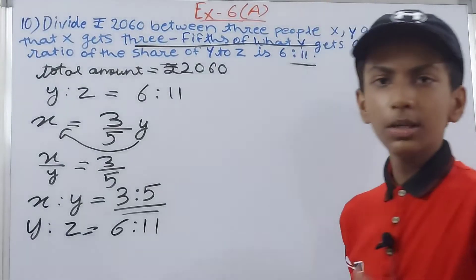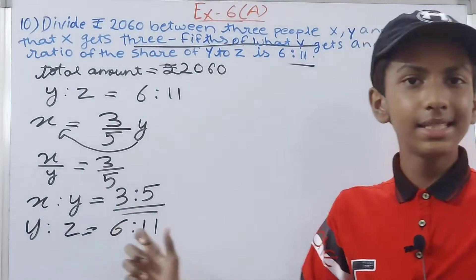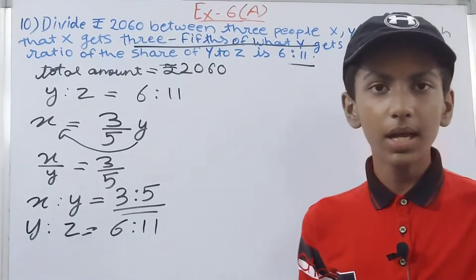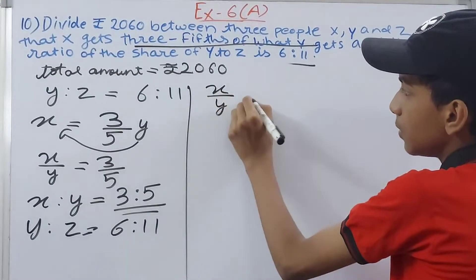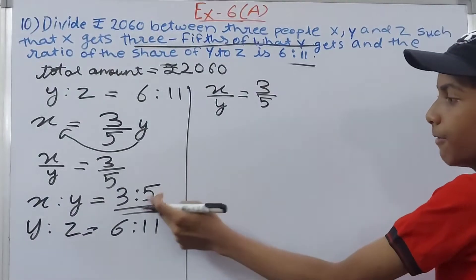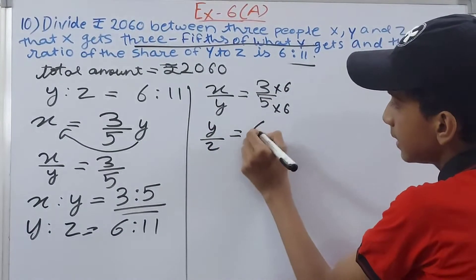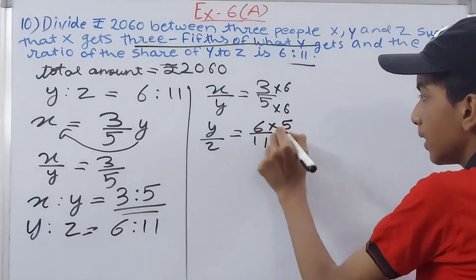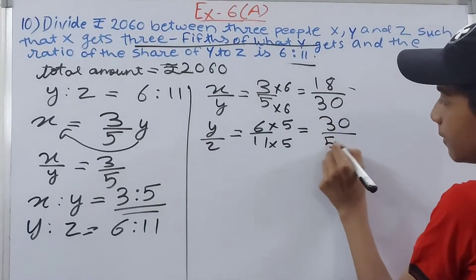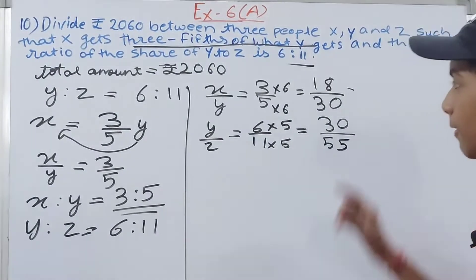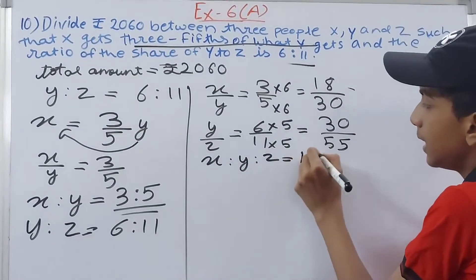Now a problem arises: Y is common in both ratios, but Y is 5 in one ratio and 6 in the other. We need to convert them using the LCM. The LCM of 5 and 6 is 30. So X upon Y becomes 18 upon 30 (multiply numerator and denominator by 6), and Y upon Z becomes 30 upon 55 (multiply by 5). Now Y is 30 in both ratios.